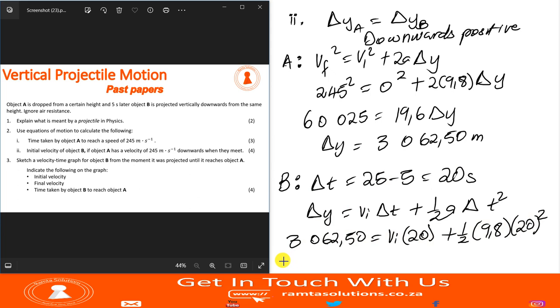So what is this? This is 3062.50 equals initial velocity, the time is 20 seconds, plus half into 9.8, the time is 20 seconds squared. We have 3062.50 equals 20 V sub I.